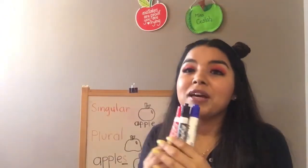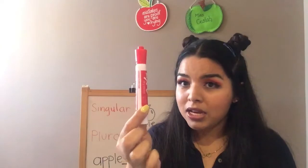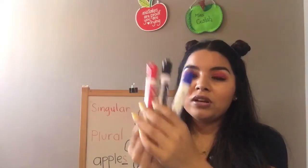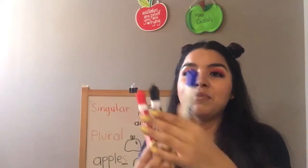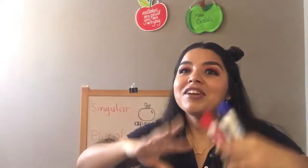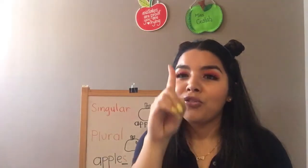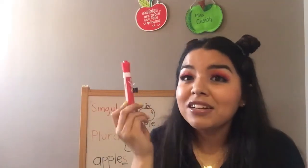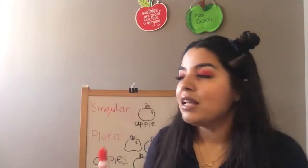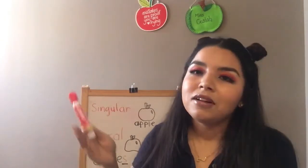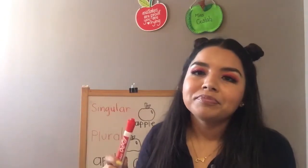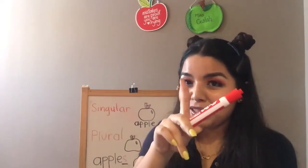Singular is one, and plural is more than one. Plural can be two, three, four, five, six, seven, a hundred, a million. So plural is more than one. The singular — only one — doesn't end with the letter S. Like book, marker, pencil, apple, monkey, tiger, cookie. Because it's one.